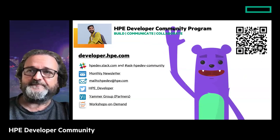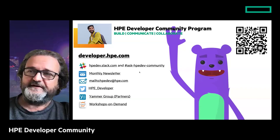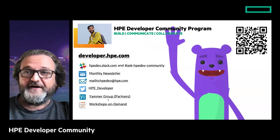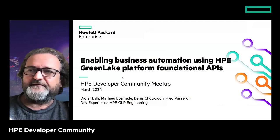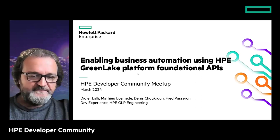Those are all the links - there's a QR code you can scan with your phone to get all these links at once. We also have a Slack internal workspace on the HPE internal network you can join, and a Yammer group for our partners where we advertise our events. All right, let's get started with the content on the GreenLake Platform Foundation API.